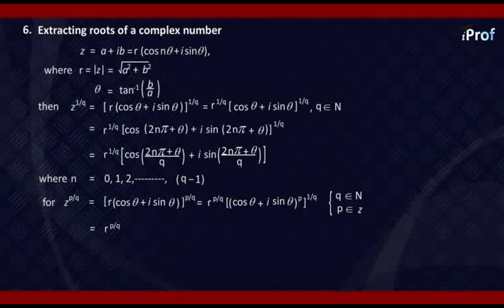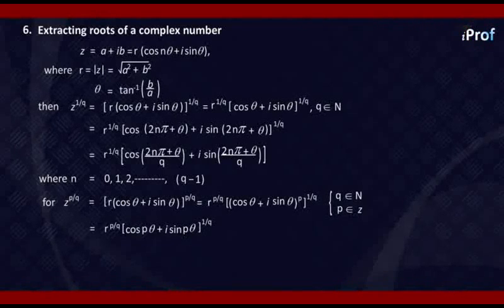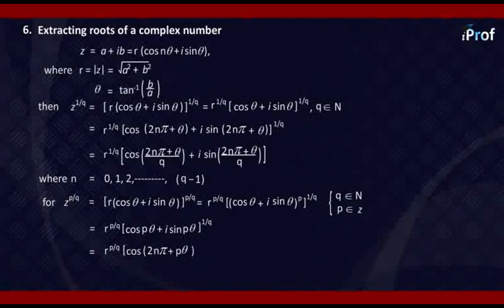R raised to power P by Q: first we go inside with P, using De Moivre's theorem with P. This becomes cos P theta plus i sine P theta, whole raised to power 1 upon Q. Here we generalize by adding 2n pi to the angle — that is, R raised to power P by Q into cos of 2n pi plus P theta plus i sine of 2n pi plus P theta, whole raised to power 1 upon Q, just as done in the previous case.